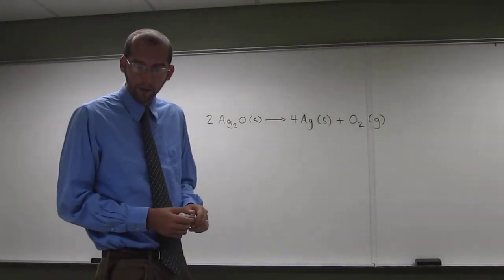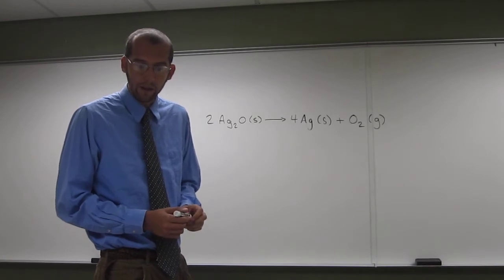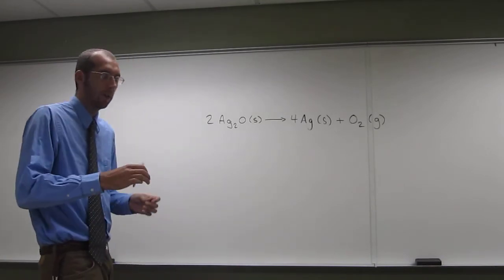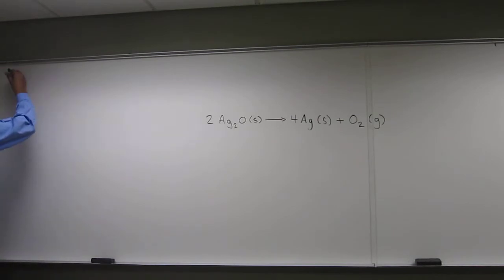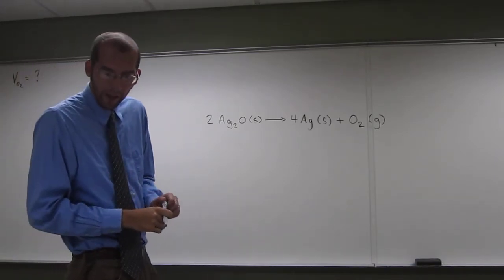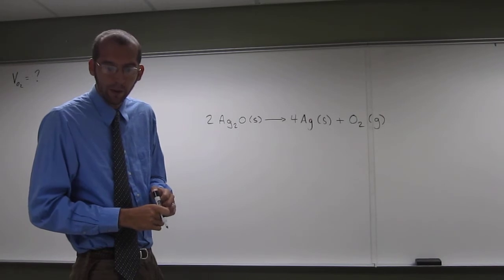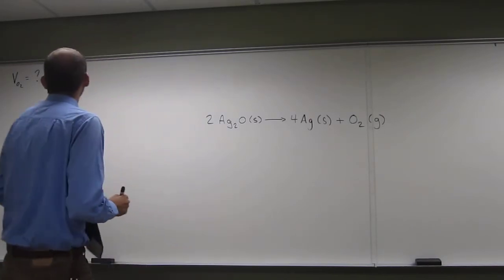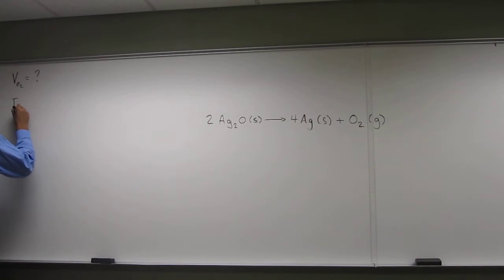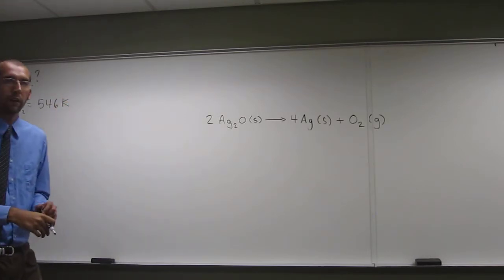So, let's write down what they're talking about. It says, what volume of oxygen will be formed at 546 kelvin? So, that's going to be the temperature of the oxygen, 546. That was nice of them, they didn't make us convert it from Celsius.